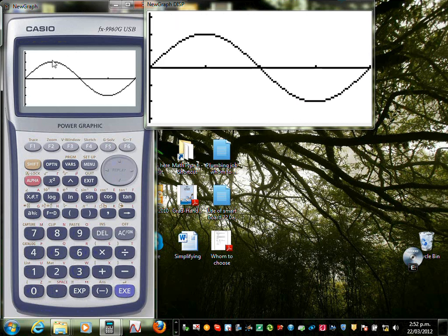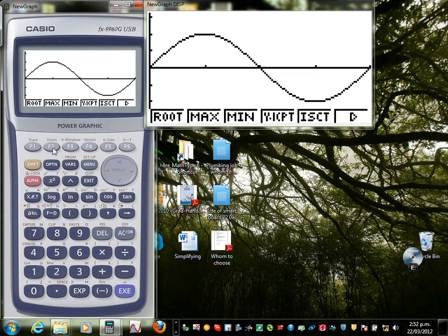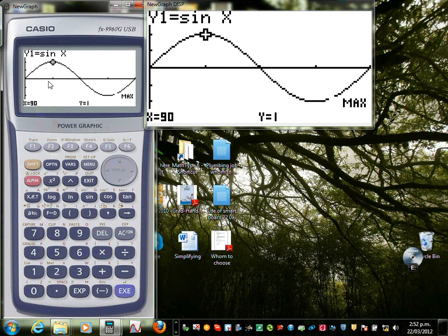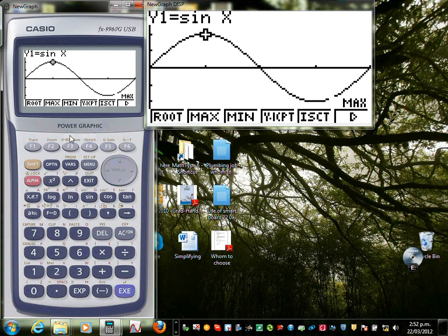So this is your sine graph. Starts at the baseline, hits maximum of 1, baseline, minimum, baseline. So just to show you the maximum. At 90 you get the maximum, and minimum would be at 270.